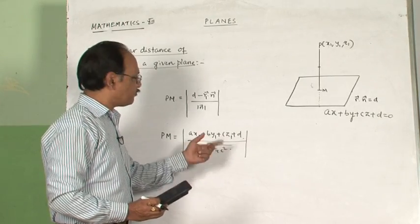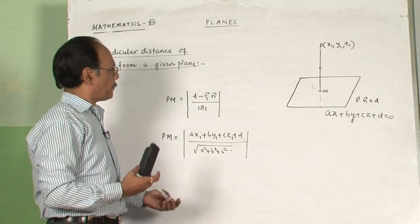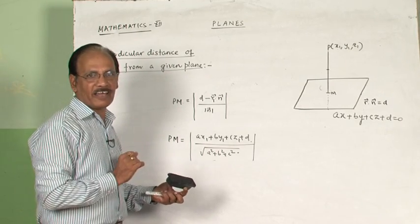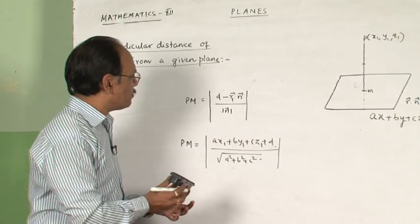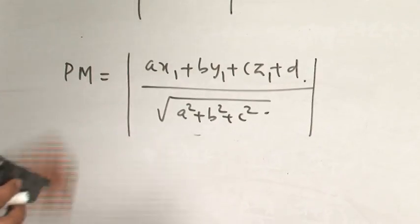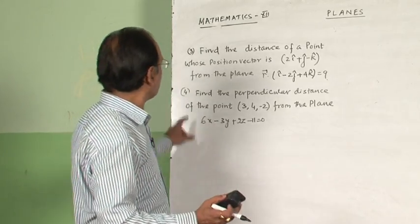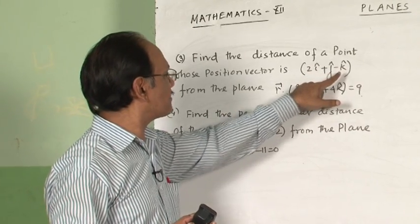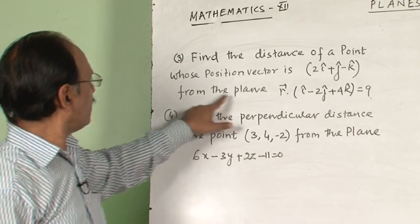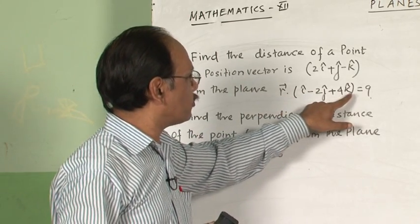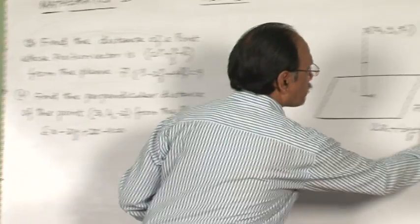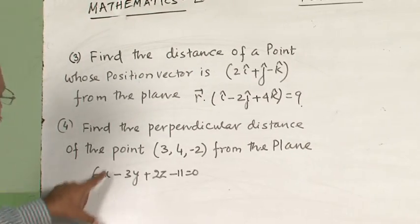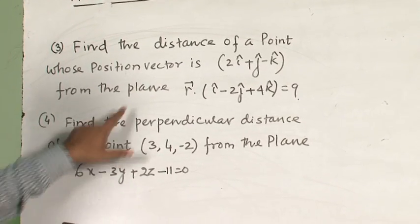This formula is analogous to the distance of a point from a 2D line from Class 11, extended here with the z-coordinate. Question 1: Find the distance of the point with position vector 2î+ĵ-k̂ from the plane r·(î-2ĵ+4k̂) = 9. We will use the vector formula here.